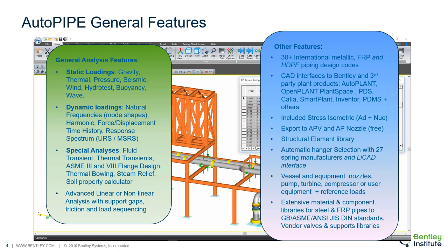Linear and non-linear analysis using the operational condition approach or load sequencing is also possible. We have 30 metallic and non-metallic design codes. We are interoperable with all the major plant design products. We include a stress ISO and Autopipe nozzle for the advanced and nuclear users. There are 27 vendors for hanger selection, and we have vessel and equipment and extensive code and material component libraries.